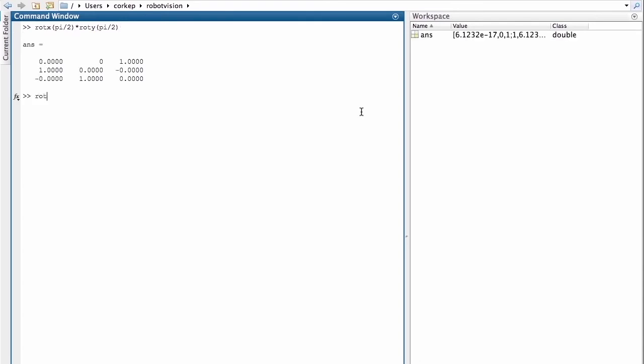Now, if I do this in the opposite order, I rotate around the y-axis first and then I rotate around the x-axis by 90 degrees in each case, I end up with a resulting rotation matrix which looks like this. And we can see that these two matrices are quite different.